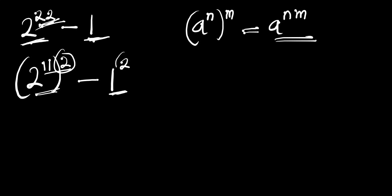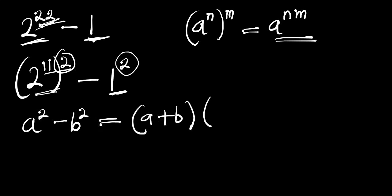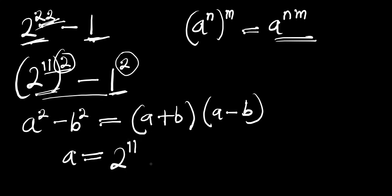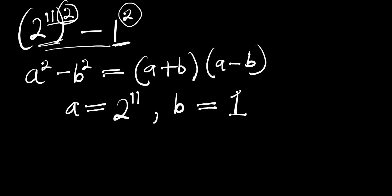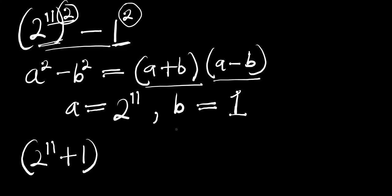Now we apply the difference of two squares: a² minus b² equals (a + b)(a − b). From this problem, a equals 2 to the power of 11 and b equals 1. So we get (2¹¹ + 1)(2¹¹ − 1).